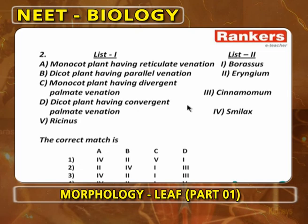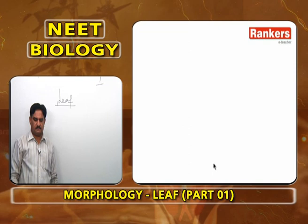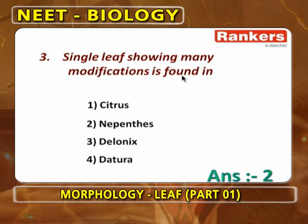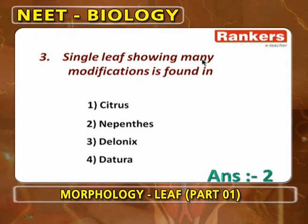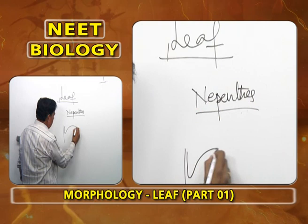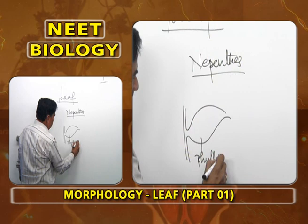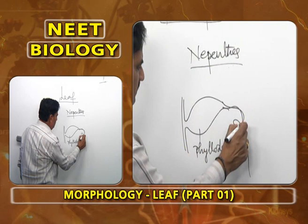Single leaf showing many modifications is found in Nepenthes, because it is an insectivorous plant. The lower part of the petiole modifies into a green chlorophyllous structure called phyllode, which performs photosynthesis. The upper part of the petiole is modified into a tendril.